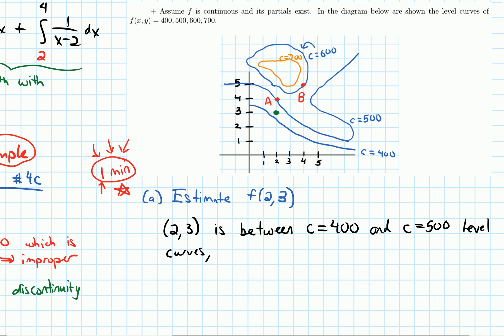So that means its output, f of 2, 3, is going to be something between 400 and 500. But since I need to estimate it, I should consider which one is it closer to, the 400 one or the 500 one? I can see from the picture that it is closer to the c equals 400 level curve.